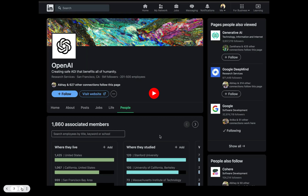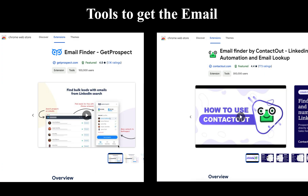If you don't want to reach out on LinkedIn because recruiters get thousands of messages daily, try cold emailing. There are tools that find email addresses of these people — two I'd recommend are GetProspect and ContactOut, each offering around 50 free credits per month, giving you about 100 emails monthly for free. Use these tools very carefully — only when you have a good profile and a confirmed job opening. If your emails keep landing in spam, your email address loses value, so be selective and intentional.